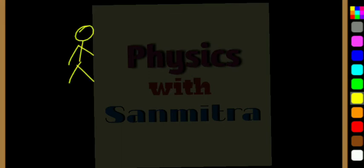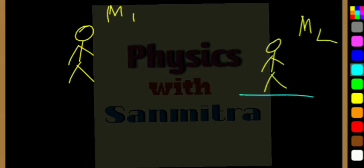Suppose this is say M1, this is a man, first man, and this is M2. M1, M2 is walking towards M1 with a velocity of 3 meter per second. And M1 is walking towards M2 with a velocity of 2 meter per second.